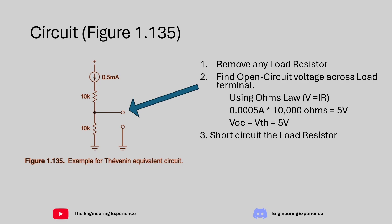Next, we need to short circuit the load resistor — so basically, we short this node to ground. Essentially, what we are doing is connecting this resistor to ground as well, shorting all of this path. After doing that, we need to find the short circuit current. However, in this circuit, because we have a current source, the current will also be 0.5 milliamps.